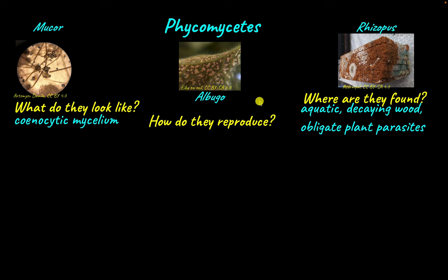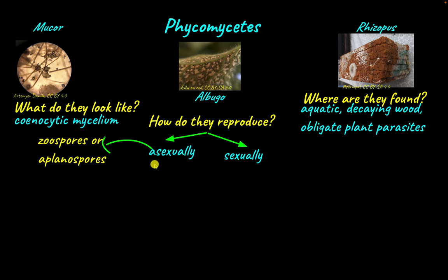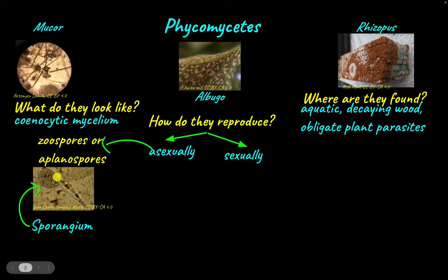Phycomycetes are capable of reproducing asexually and sexually. Asexual reproduction occurs through zoospores or aplanospores. Zoospores are motile — they have a flagellum which helps the spores move. Aplanospores are non-motile. These asexual spores are produced inside structures called sporangium — they are produced endogenously, meaning inside the sporangium. These dots you can see here are the spores — the zoospores and the aplanospores.